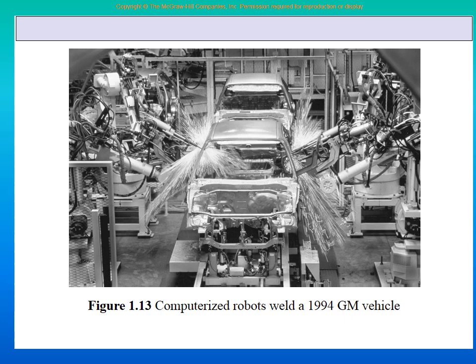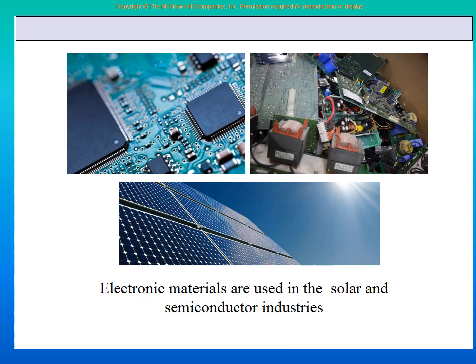So electronics can go from a very small product to something as large as a whole factory. Here we are also showing you lots of different electronic chips, transistors, circuit boards, and solar cells — in all of them there is a lot of electronics involved.